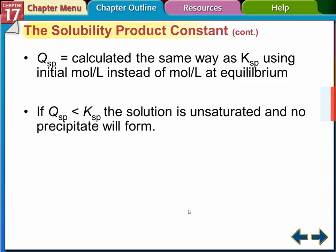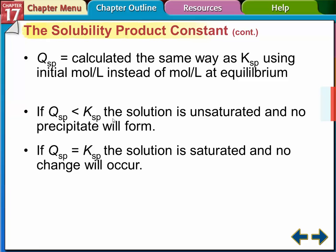Okay, but it's calculated the same way as the Ksp, but it's using the initial moles per liter concentrations instead of the moles per liter at equilibrium. And we use this to compare it to the Ksp. So if the Qsp is less than the Ksp, the solution is unsaturated, no precipitate will form.